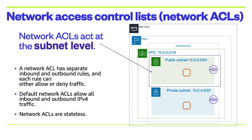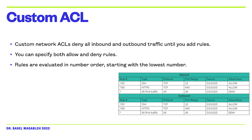Similar to security groups, we can also control traffic at the subnet level using a Network Access Control List (ACL). A network access list is an optional layer of security for your Amazon VPC. It acts as a firewall for controlling traffic in and out of one or more subnets. To add another layer of security to your VPC, you can set up network access lists and specify rules to allow or deny specific traffic. Your VPC automatically comes with a modifiable default network access list that, by default, allows all inbound and outbound IPv4 traffic and, if applicable, IPv6 traffic.